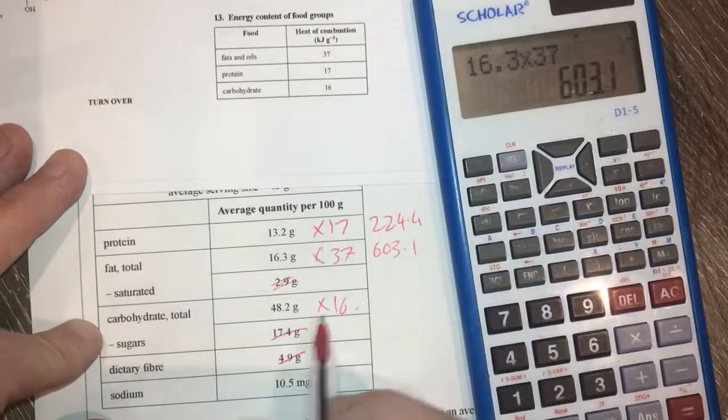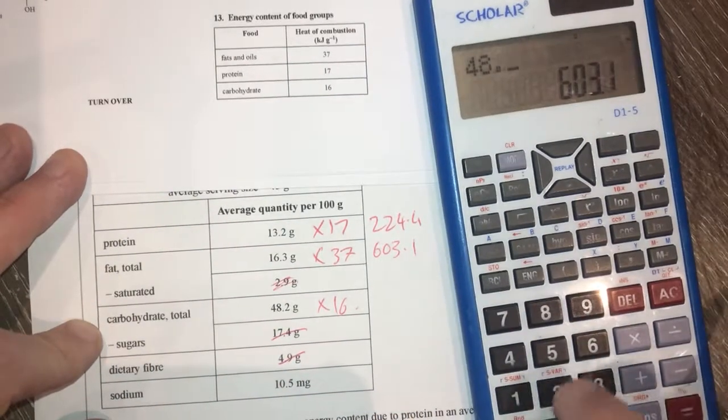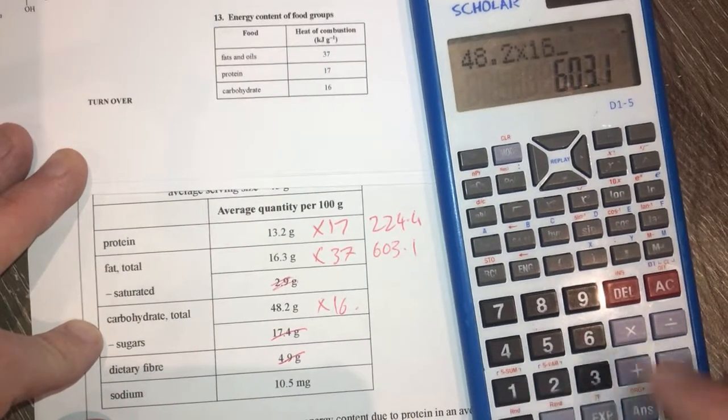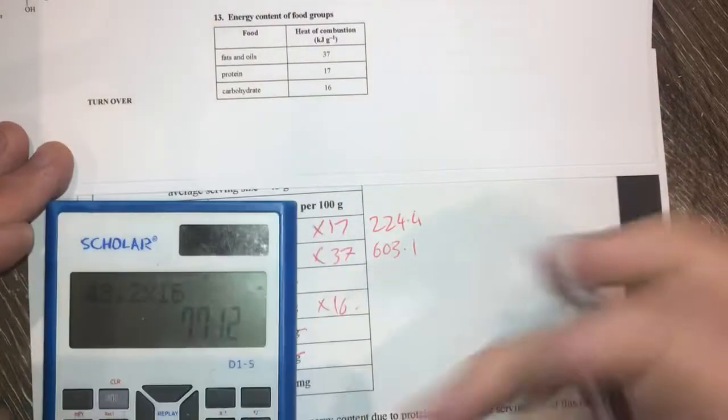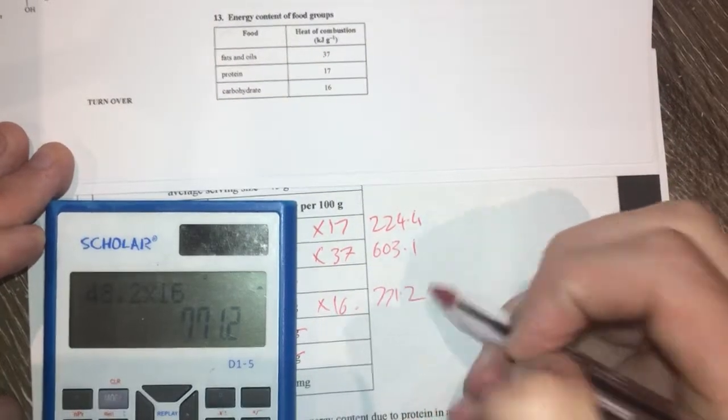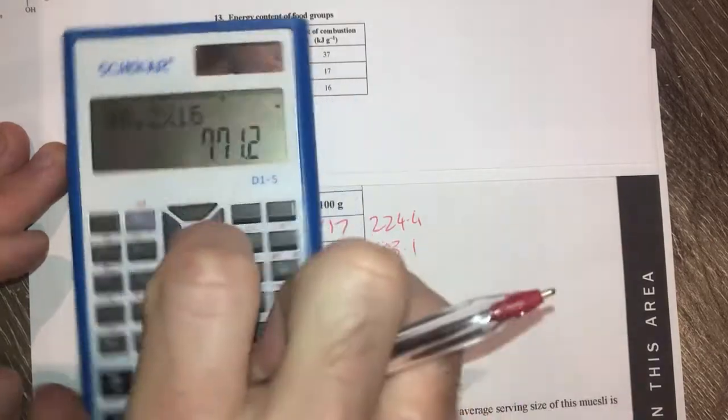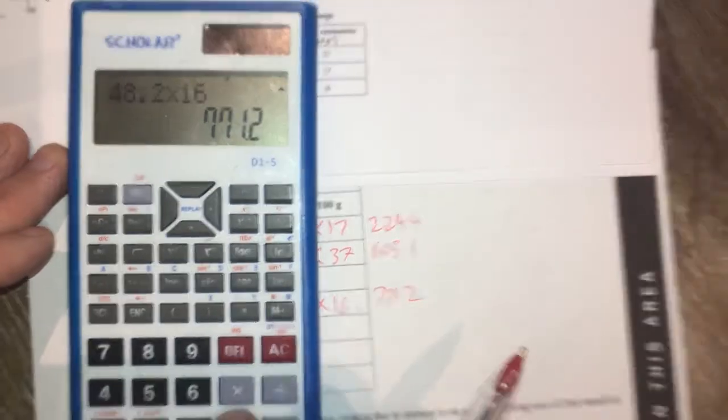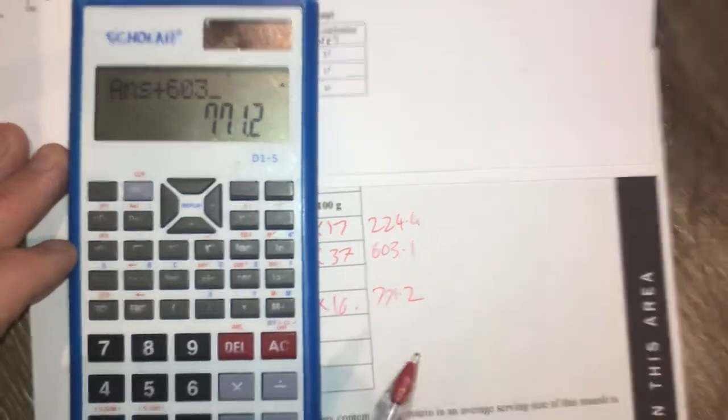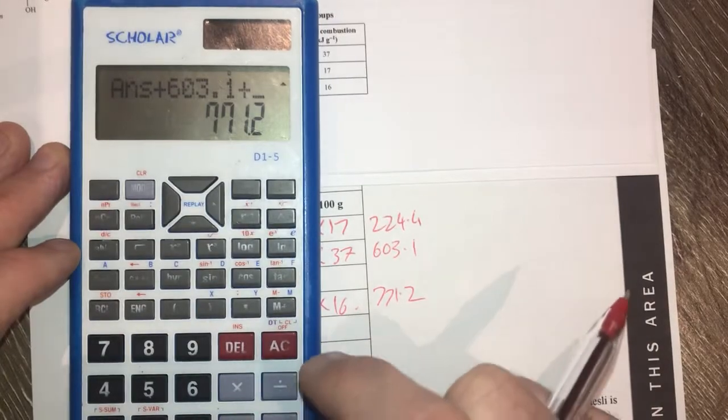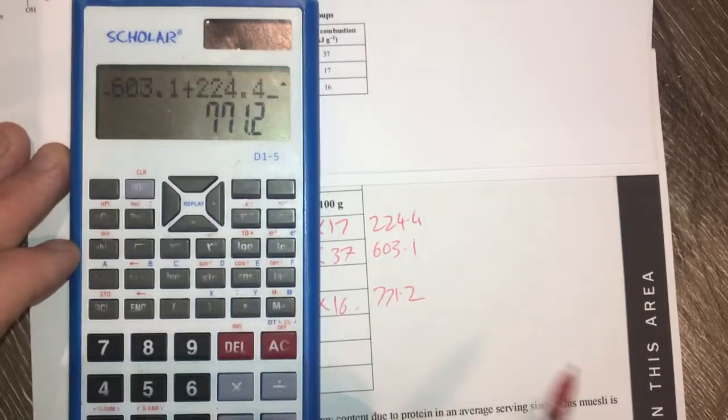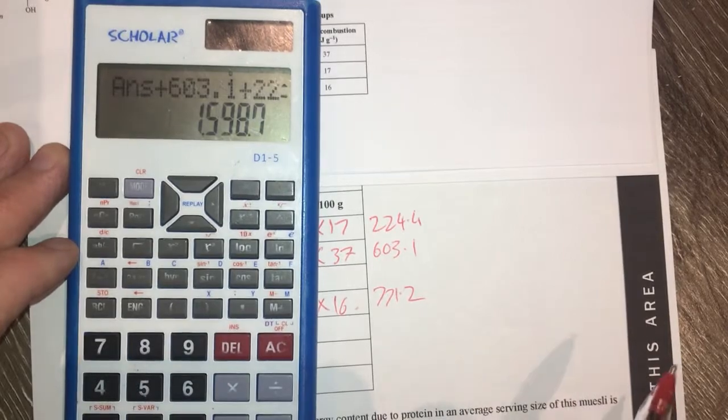And then carbohydrates is 48.2 times 16 gives me 771.2. So I'll add these together: 603.1 plus 224.4 gives me this number here.